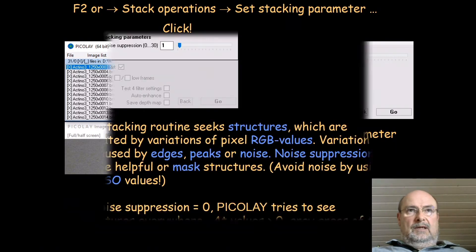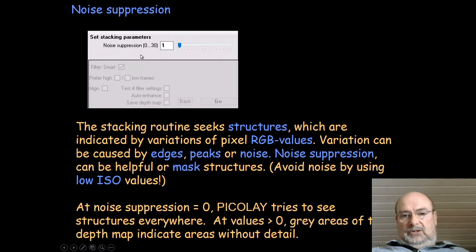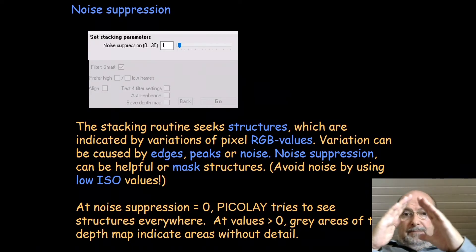Let's start with the first line: noise suppression. What does it mean? You should know the stacking routine looks for structures. Structures are indicated by variations of pixel values. Pixel values means RGB red, green, and blue values which are between 0 and 255, and the variation can be caused by edges, by peaks, or just by noise.